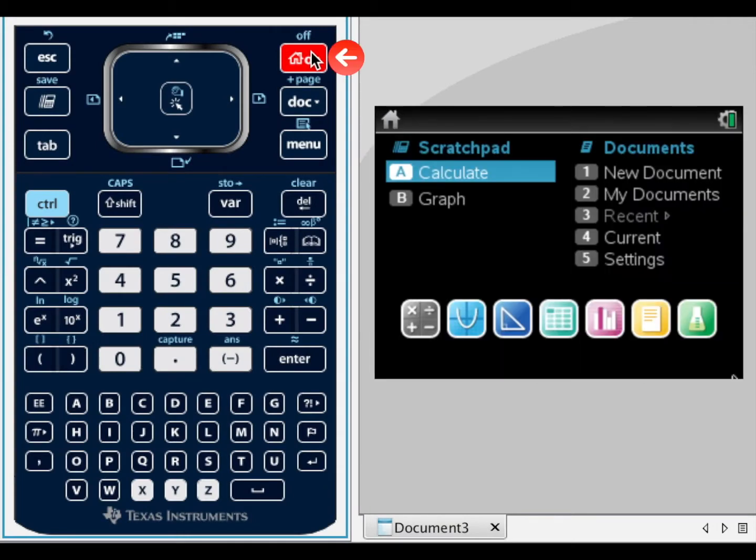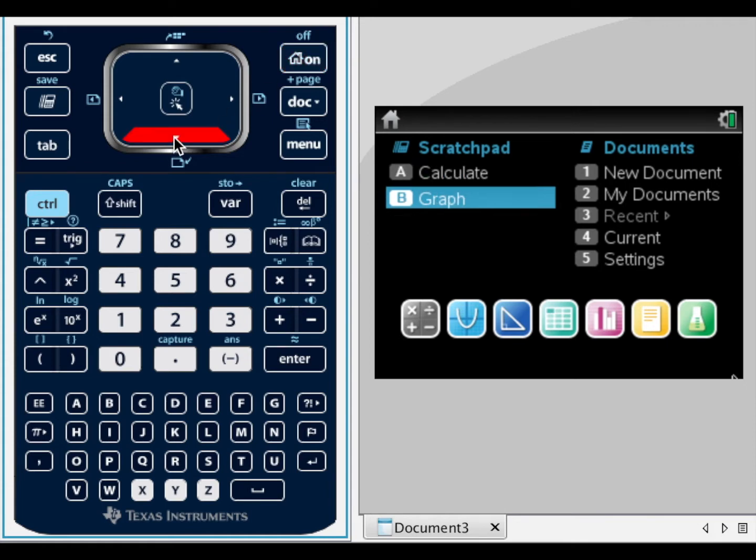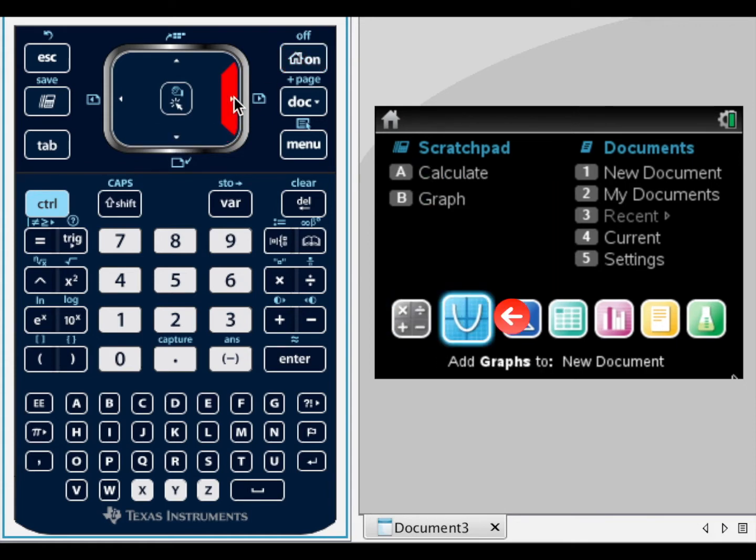Hit home, use the down arrow to get to the icons, and the right arrow to get to the graph page icon. Enter.